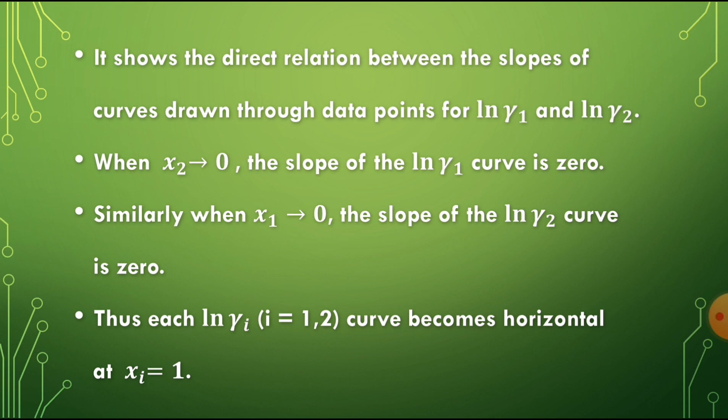When x2 tends to 0, the slope of the ln gamma1 curve is 0. Similarly, when x1 tends to 0, the slope of the ln gamma2 curve is 0. When one composition tends to 0, the ln gamma1 curve slope becomes 0, and when x1 tends to 0, the ln gamma2 curve slope is 0. For each ln gamma_i (i = 1, 2), the curve becomes horizontal at x_i equal to 1.